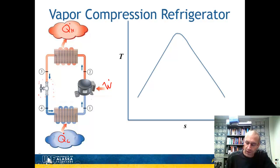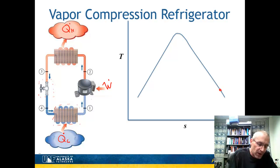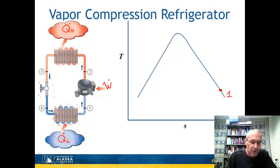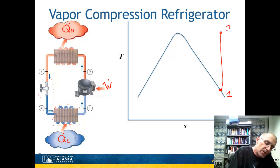Let's draw this cycle on the TS diagram, starting at point 1. The freezer box is at the bottom of the cycle. A mixture comes in and absorbs energy, becoming more of a vapor. In the ideal cycle, we assume point 1 is a saturated vapor — on the right-hand side of the TS diagram. It then runs through a compressor, and for the ideal cycle that is an isentropic compressor, so it goes straight up on the TS diagram. Point 2 is directly above point 1 in the superheated region.